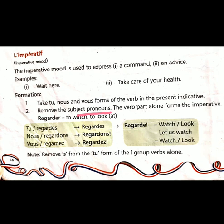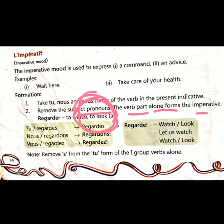We have to remove the subject pronoun — the verb part alone forms the imperative. For example, if I want to say 'you shut the door,' I do not say 'you please shut the door.' In English also we do not use pronouns in the imperative form. So it is very easy.